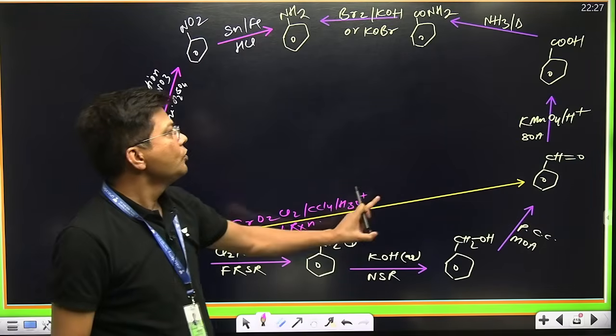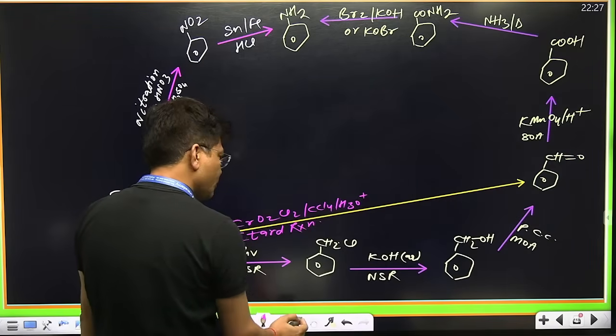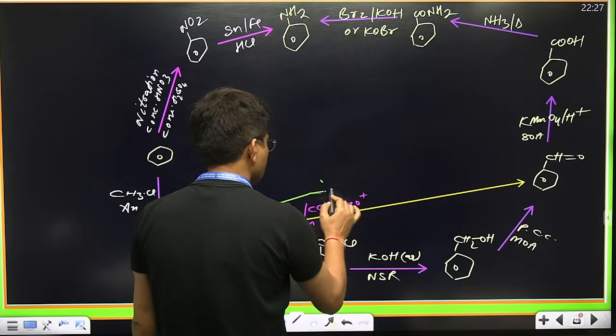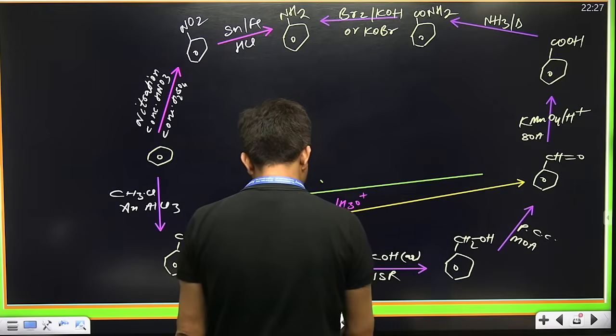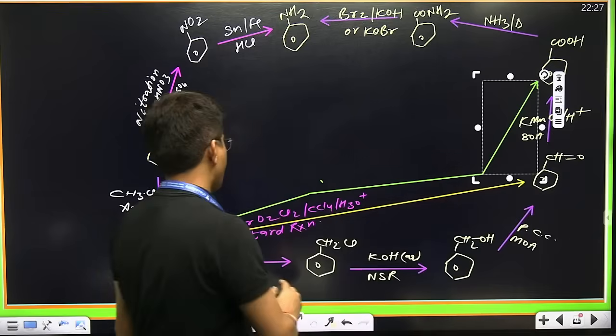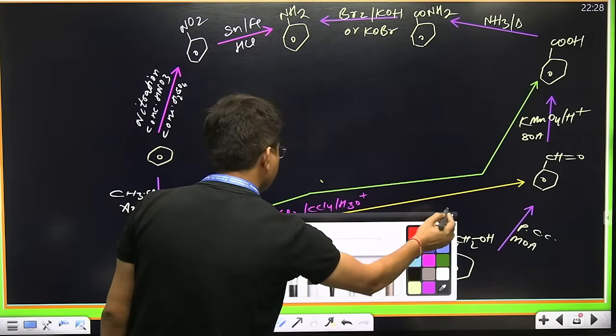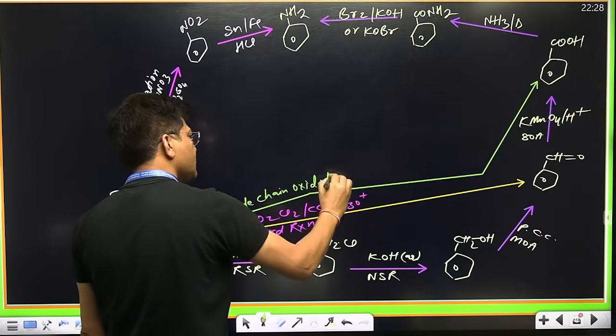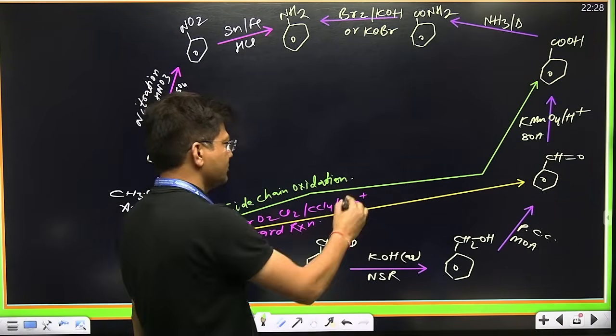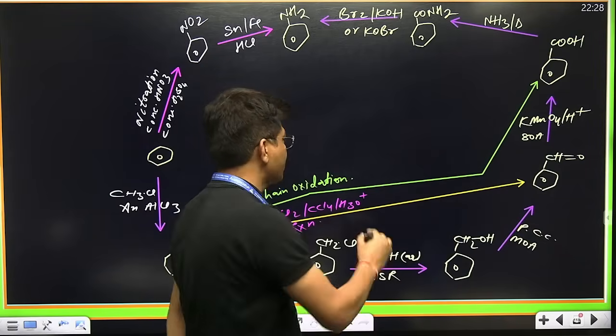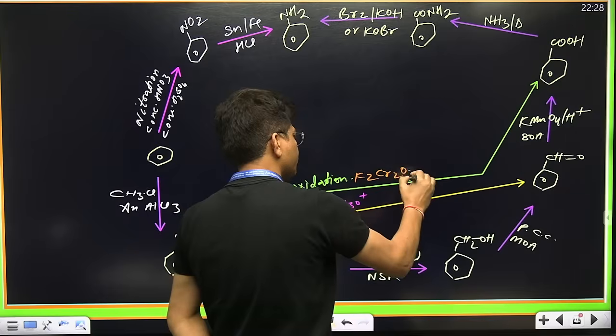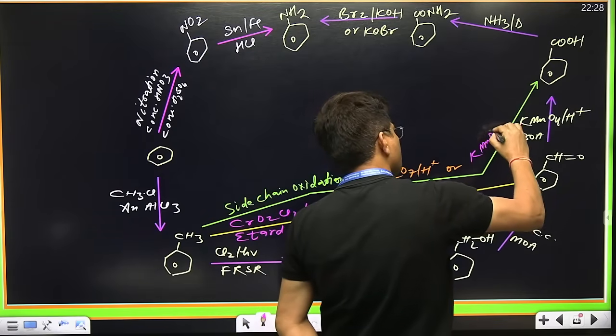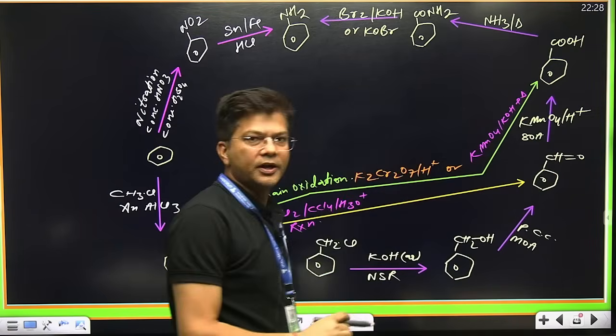If you want to reach from toluene to benzoic acid directly, use side chain oxidation. Which reagent? Use K2Cr2O7 acidic medium, or your pink color KMnO4, or KOH heat. Either of them you can use to get this.